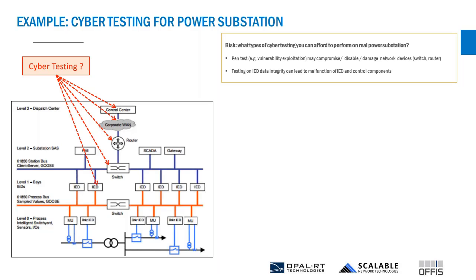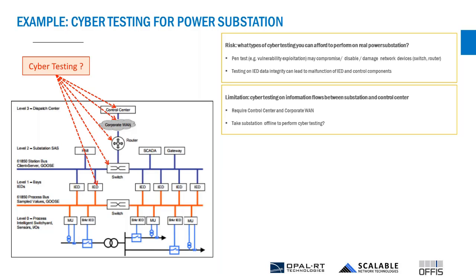That's a big challenge and a big risk. In terms of limitations, you want to test the power subsystem, but the power system needs to operate in the context of communicating with other entities like the control center. You still need those entities available and operational for the exchange of information flow.